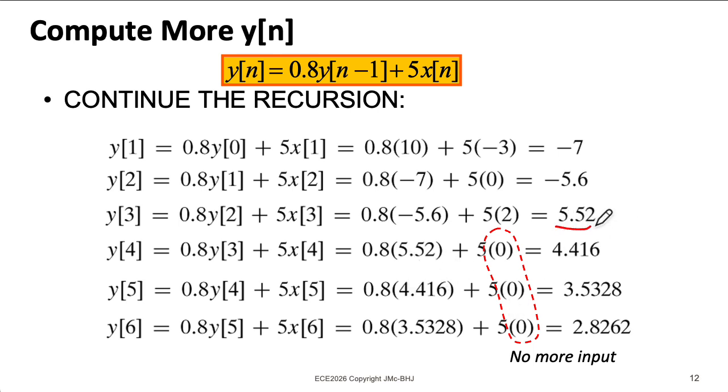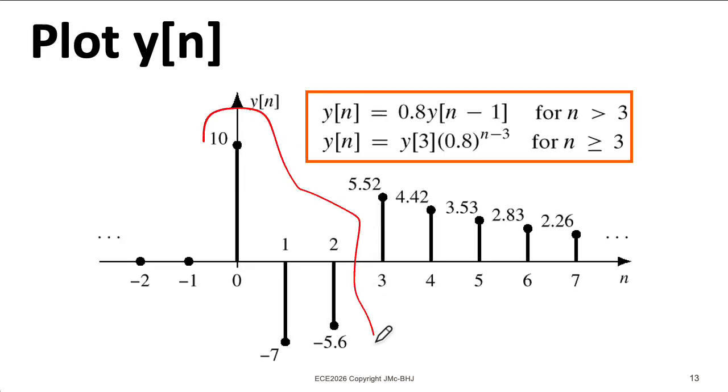And then multiply it by 0.8, and then multiply it by 0.8. And then that pattern continues. So we have this complicated behavior at the beginning. But once we run out of input, we have this decaying exponential kind of behavior.